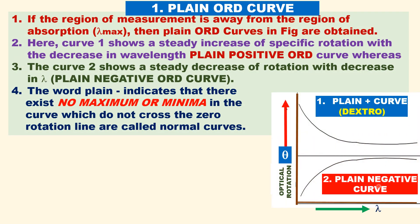Now, what is an ORD curve? It is a plot of the change in optical rotation with respect to wavelength. There are two types of ORD curves: one — plain ORD curves, and two — Cotton Effect curves. Plain ORD curves are obtained when the region of measurement is far away from the region of absorption (lambda max).